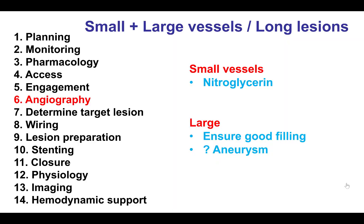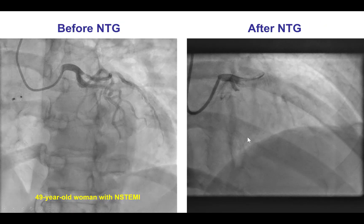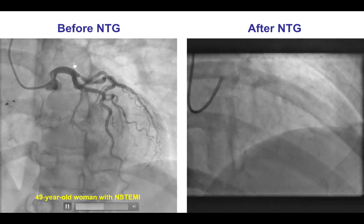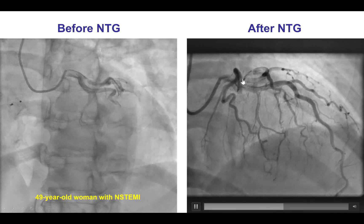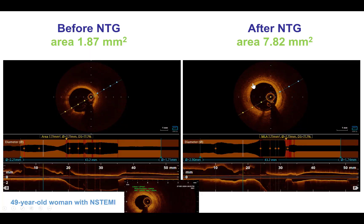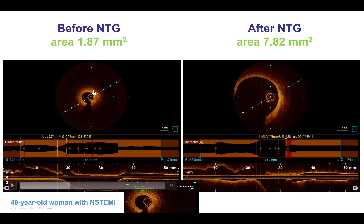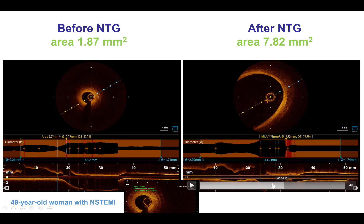When it comes to angiography, it is particularly important for small vessels to give nitro to ensure maximum dilatation of the vessel, and for large vessels to ensure good engagement as well as good injection of contrast. These are examples of how nitro can affect the appearance of the angiogram. There appears to be a lesion in the circumflex that disappears after giving intracoronary nitroglycerin. The same thing is shown on intravascular imaging with OCT — a very small area before giving nitroglycerin that becomes much larger after.